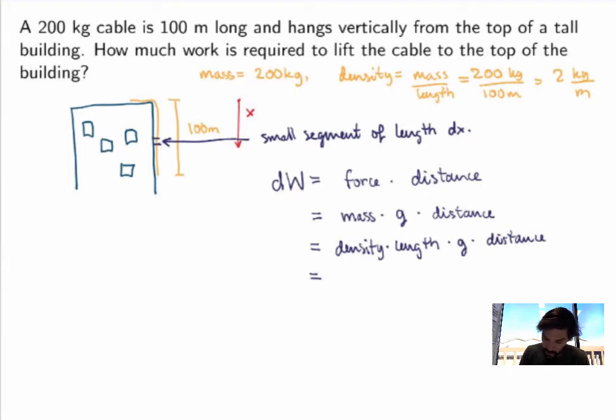So now the density I've calculated is 2. The length of my segment is dx. g I'm going to keep as g, but this is 9.8 meters per second squared.